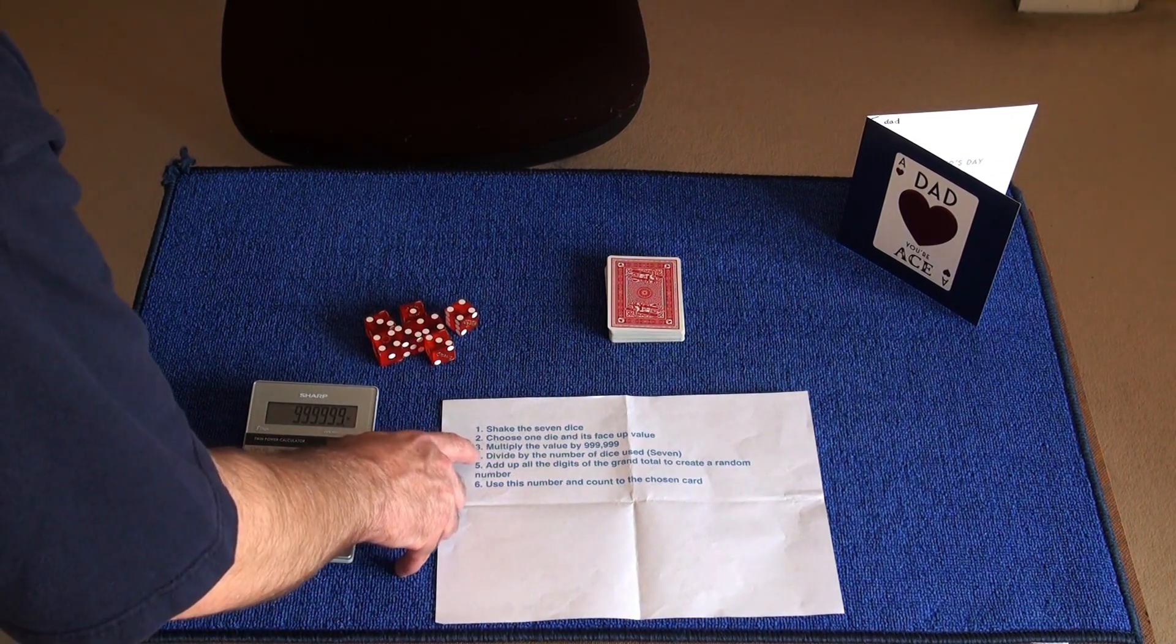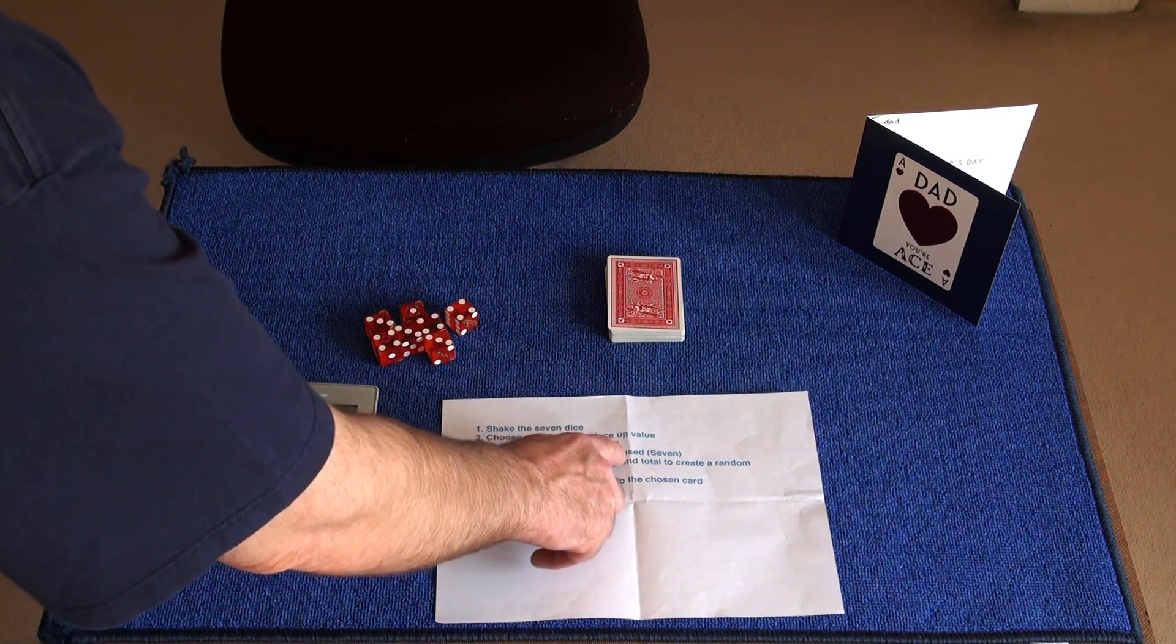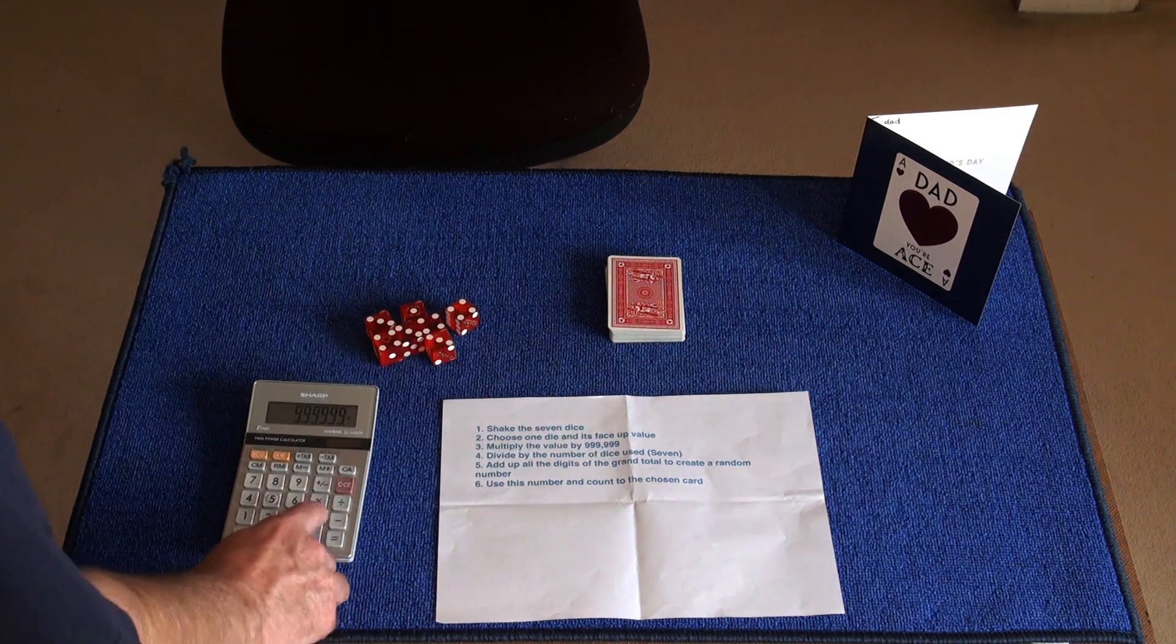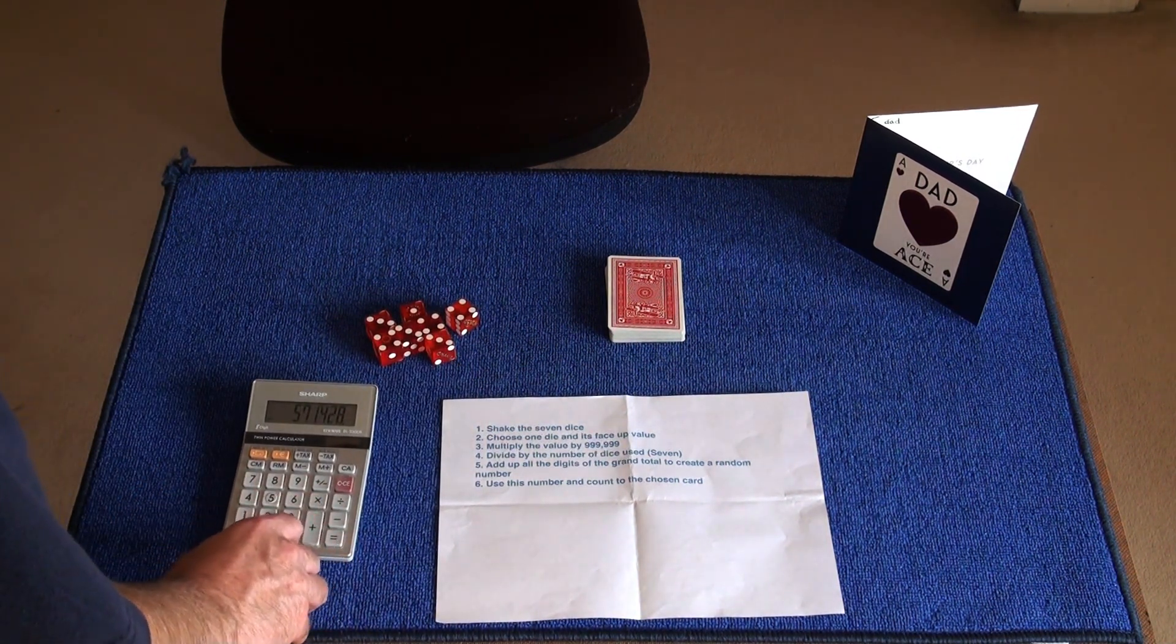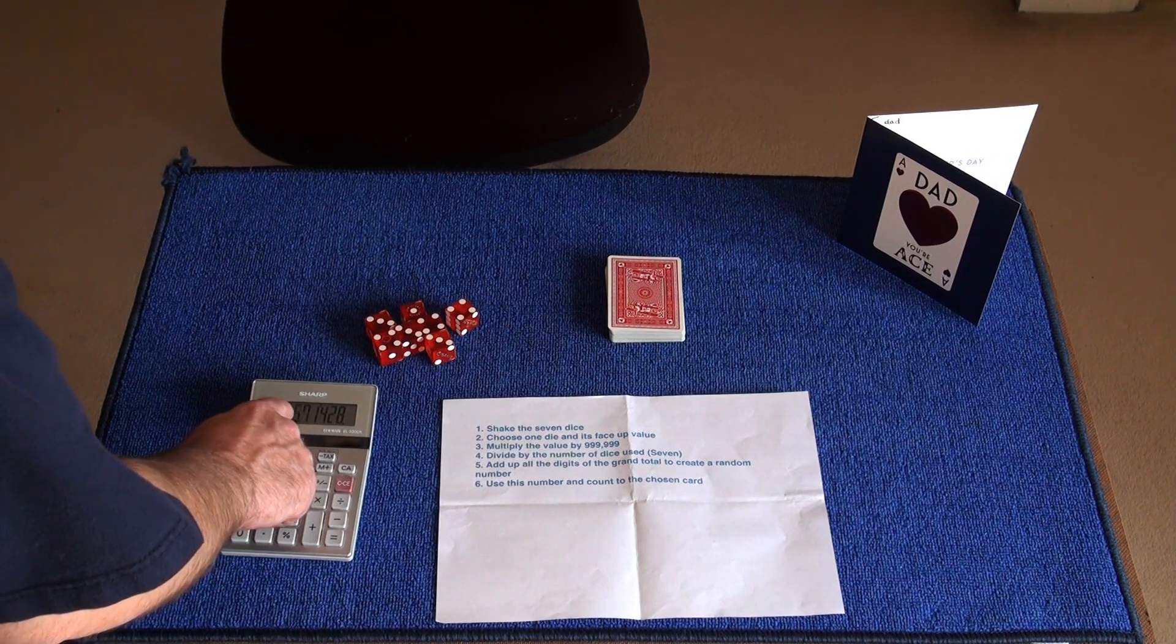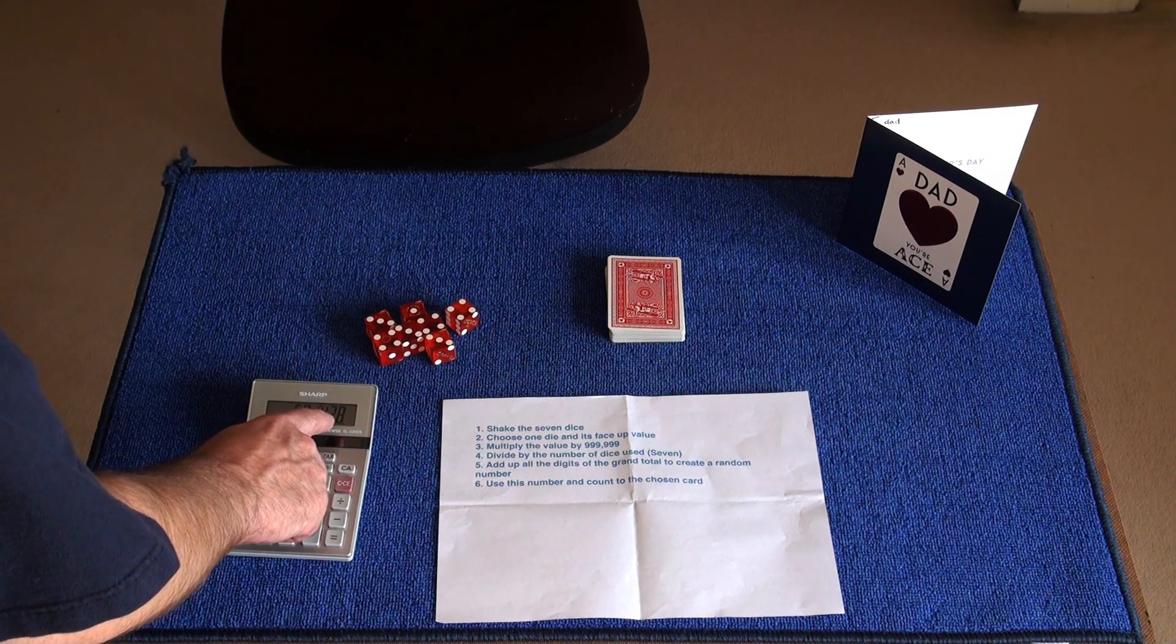And it says step four: divide by the number of dice used, which is seven. So we'll divide by seven and press equals. And we've got a value of 571,428.